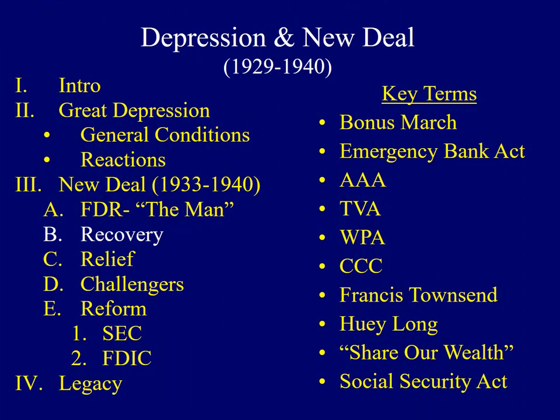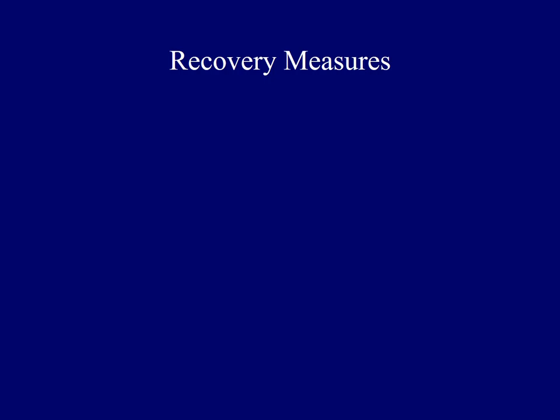The New Deal is often referred to as the alphabet soup of American history, as many different lettered agencies were created to fight the Great Depression. It would be impossible to cover all New Deal measures, so they will be broken down into three different areas. The first group to look at would be recovery programs. The first of the three R's includes the so-called recovery measures, with three examples: the EBA, the AAA, and the TVA.